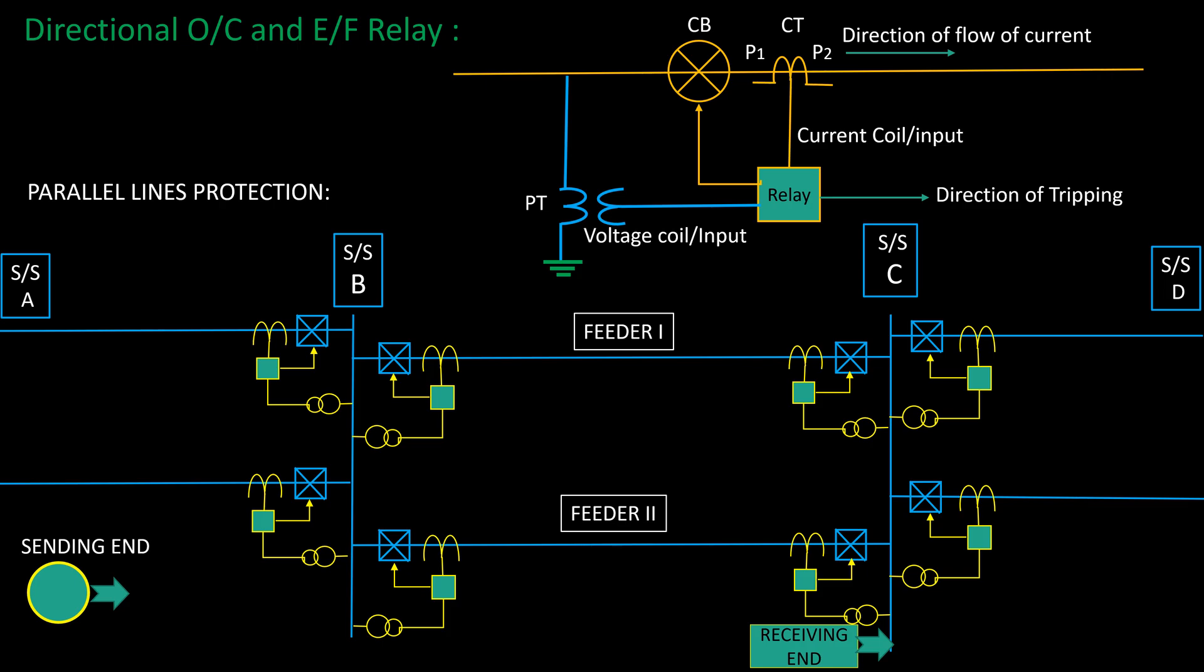The parallel lines between substation B and substation C under consideration is being protected by four circuit breakers controlled by four numbers of overcurrent and earth fault relays: R1, R2, R3, and R4.